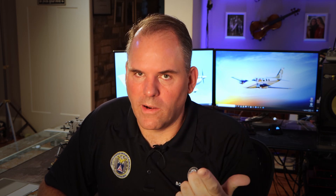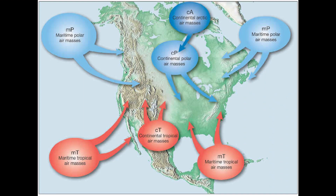These source regions can be identified by a two-letter code. The first letter indicates the type of surface that the region sits over — there are only two options: you're either over land or over water. If you're over land, we call it continental and use a lowercase letter C. Continental regions will tend to have less moisture in the air mass. If you're over water, we call it maritime and use a lowercase letter M. Since maritime air masses are over the water, they tend to absorb that water and have a higher percentage of moisture.